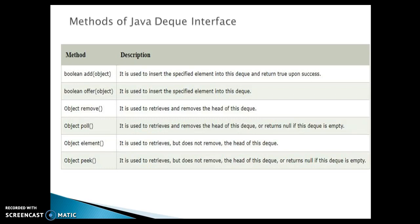The remove method is used to retrieve and remove the head of the Deque — it removes the element from the head and returns that element to you. The poll method is used to retrieve and remove the head of the Deque as well, but returns null if the Deque is empty. So poll retrieves and removes elements from the head, and if the Deque is empty it returns null.